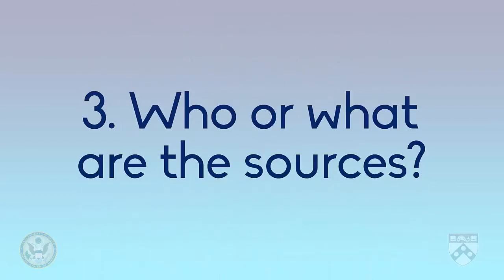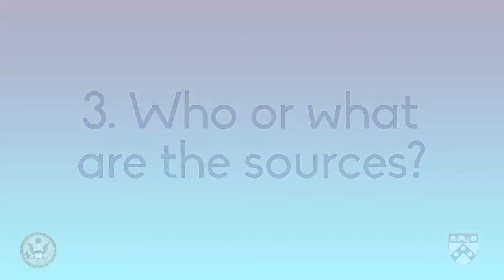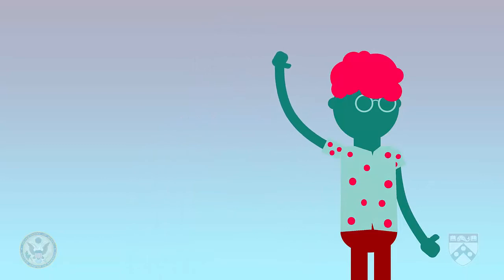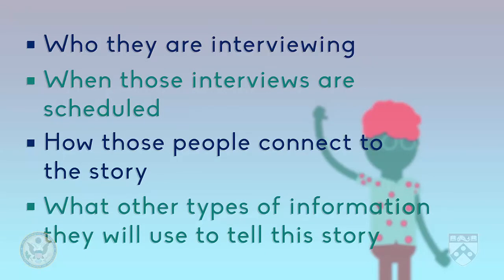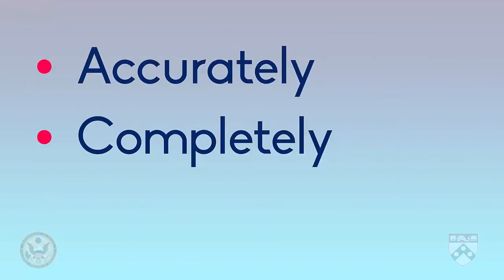The third question is: who or what are the sources? The journalist needs to prove that they have access to information on this topic. They should say who they're interviewing, when those interviews are scheduled, how those people connect to the story, and what other types of information they'll use to tell this story. This proves to the editor that the journalist can get the information needed to tell this story accurately, completely, and truthfully.